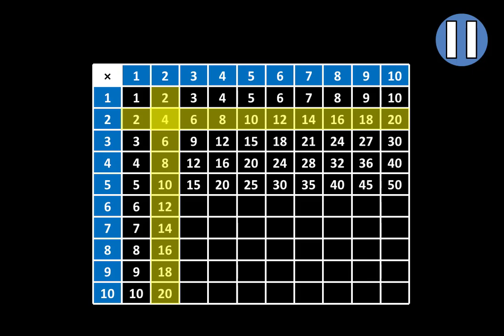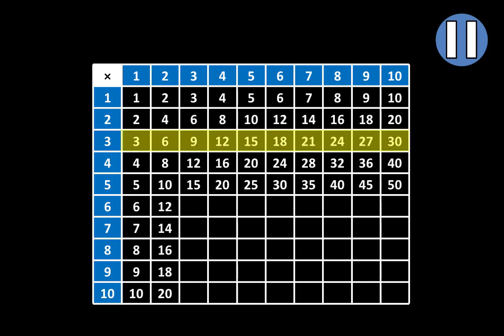Pause at any point. In this row, we'll see all of the multiples of 3 from 3 to 30. So in this column, we'll see all of the multiples of 3 from 3 to 30. Since the last one is 15, fill in 18, 21, 24, 27, and 30.